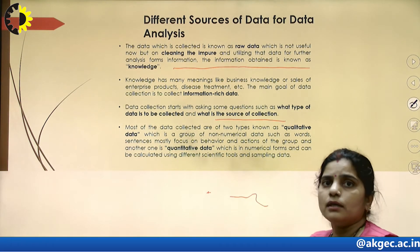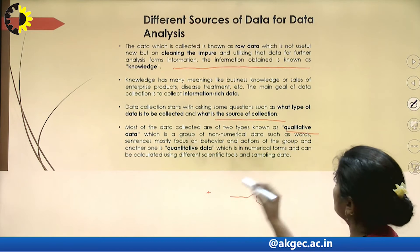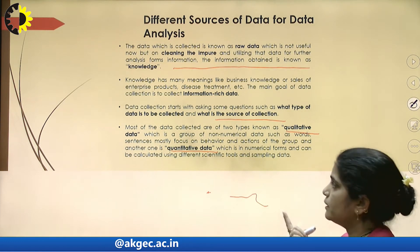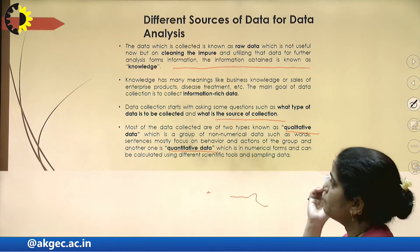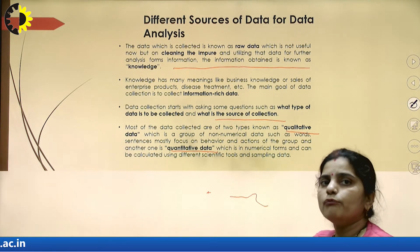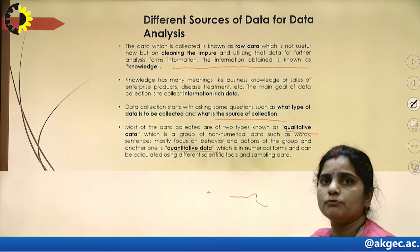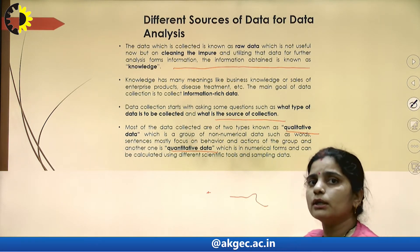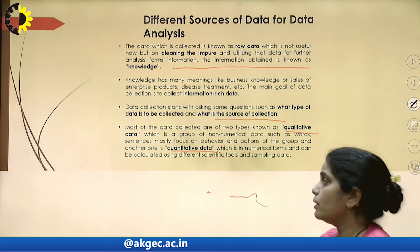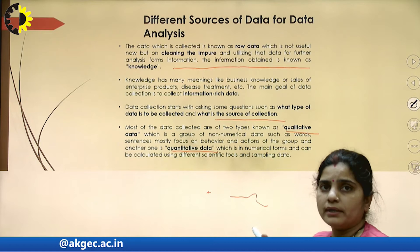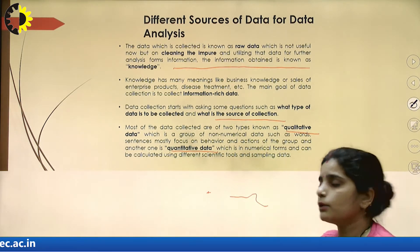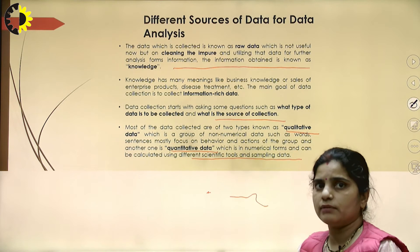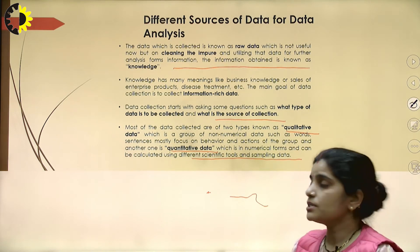Most of the data we collect is classified into two types. The first one is qualitative data and the second one is quantitative data. Qualitative data is a collection of non-numerical data — it consists of textual information, words, and sentences, and focuses mainly on the behavior and actions of a group. Quantitative data is in numerical form and can be calculated using different scientific tools and sampling methods. These two classifications emphasize textual information and numerical form respectively.